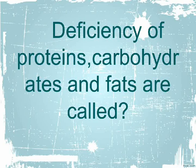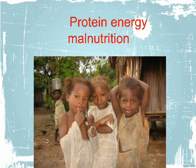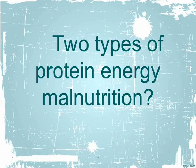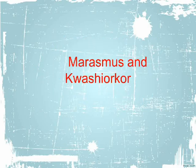Deficiency of proteins, carbohydrates, and fats is called Protein Energy Malnutrition. There are two types of Protein Energy Malnutrition: Marasmus and Kwashiorkor.